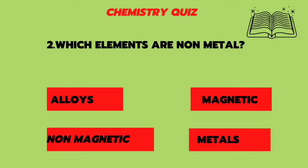Second question: which elements are non-metal alloys — are they magnetic or non-magnetic metals? The answer is non-magnetic.